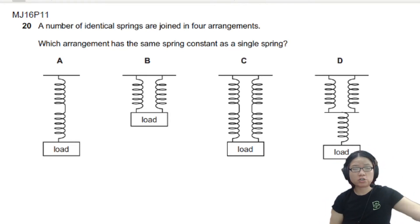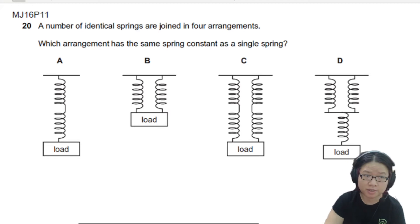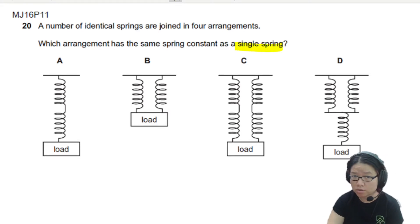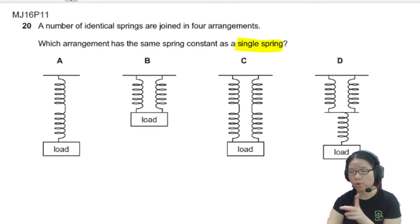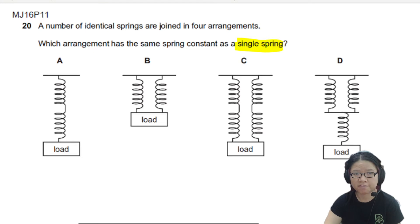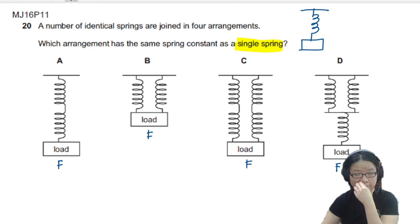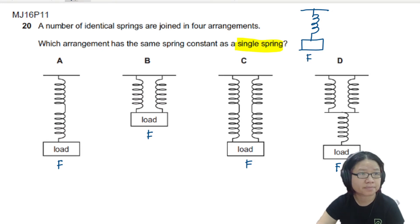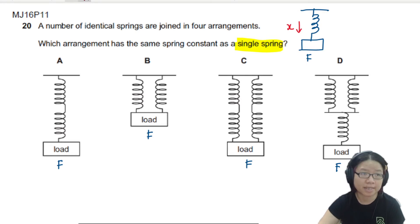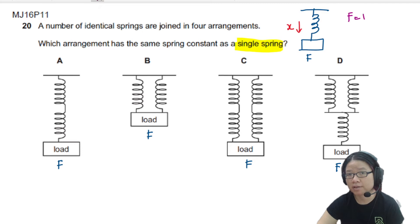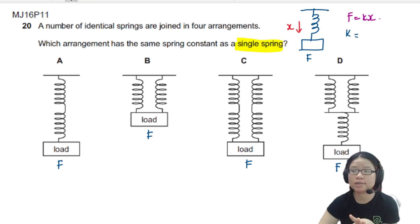In this video, you are given four arrangements of springs and asked which arrangement has the same spring constant as a single spring. If you place a load on a single spring, the force is F, and if the extension is x, then using F = kx, the spring constant k for the single spring is F over x.